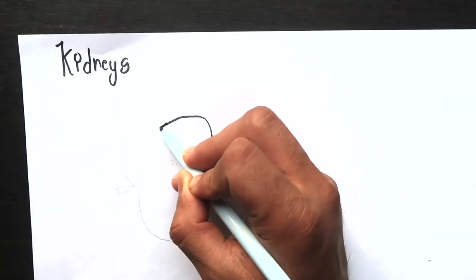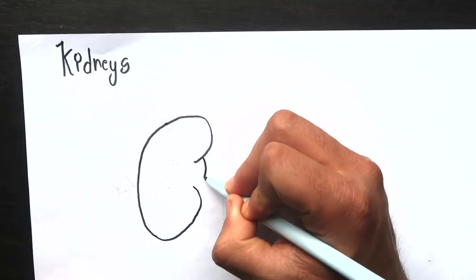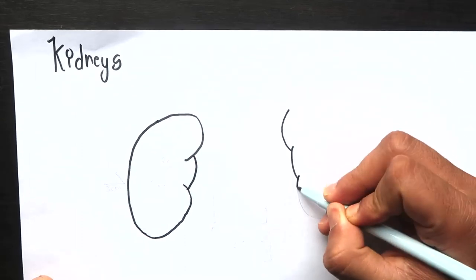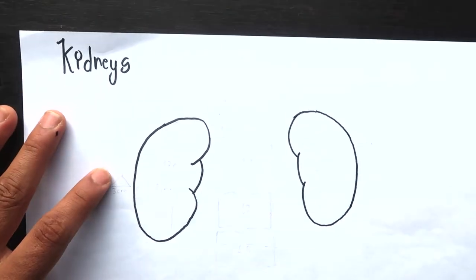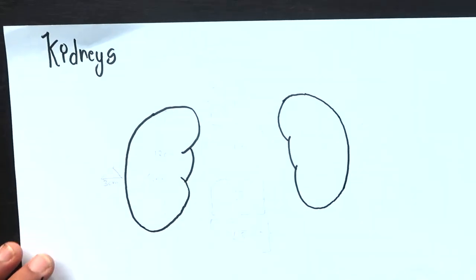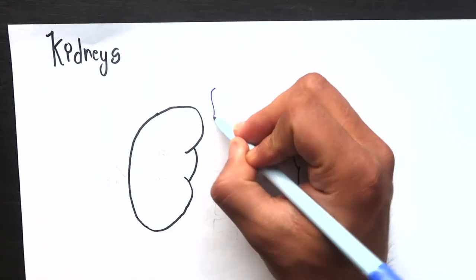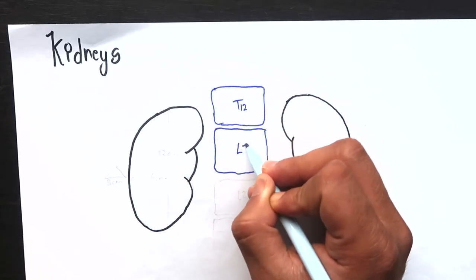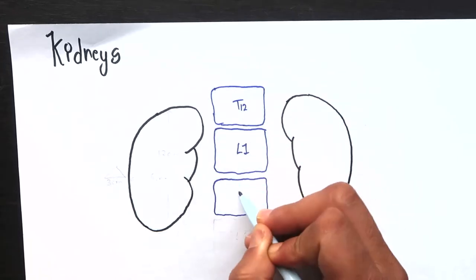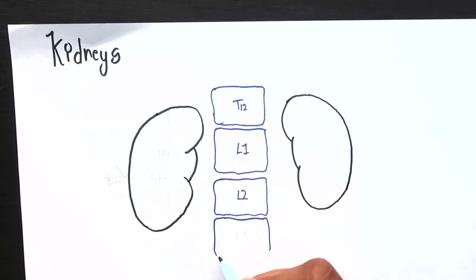Kidneys are a pair of excretory organs and they are situated in the posterior abdominal wall behind the peritoneum, hence they are called retroperitoneal organs. Kidneys remove waste products and excess of water and salts from the blood and maintain its pH. Right kidney lies slightly lower than the left kidney because of the presence of huge right lobe of liver above it.